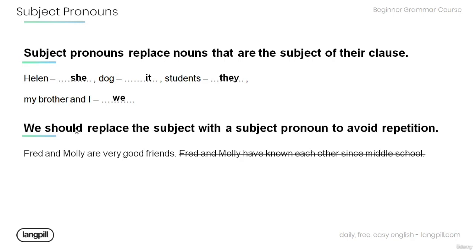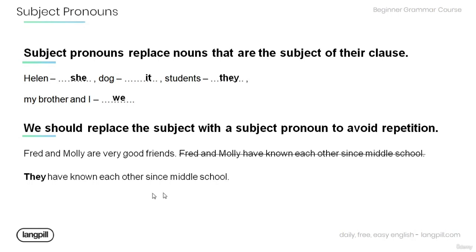Note that we should replace the subject with a subject pronoun to avoid repetition. Have a look at the sentence: 'Fred and Molly are very good friends. Fred and Molly have known each other since middle school.' Try to avoid this repetition by using a subject pronoun: 'They have known each other since middle school.'